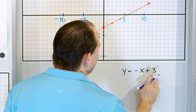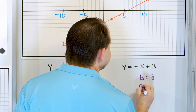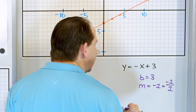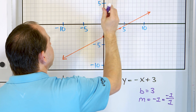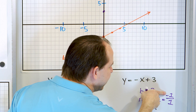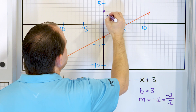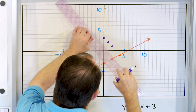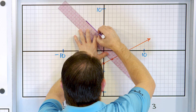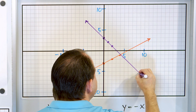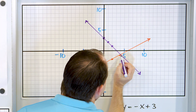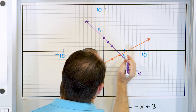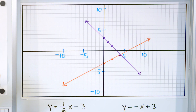Now for the second line: what is the y-intercept? It's positive 3. And the slope is whatever is in front of x — there's a negative sign, so the slope is negative 1, which is a rise of negative 1 and a run of 1. The y-intercept is at 3. Since the slope is negative, we go down 1 and over 1, then down 1 and over 1 again. I have enough points to draw a nice line through all of them. You can tell the intersection point is right here.